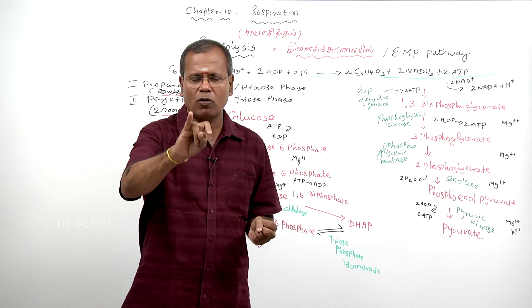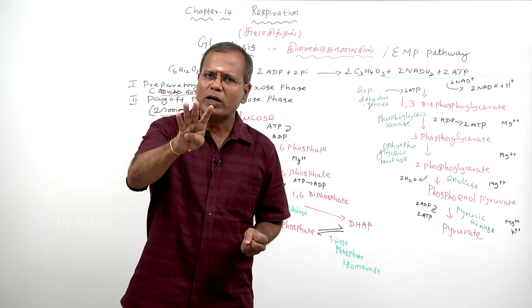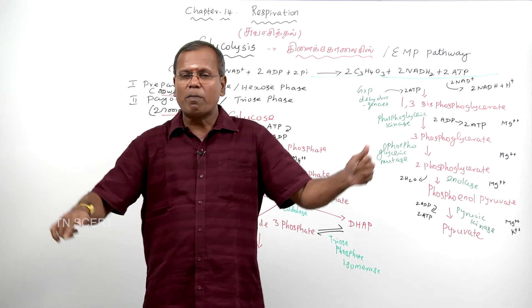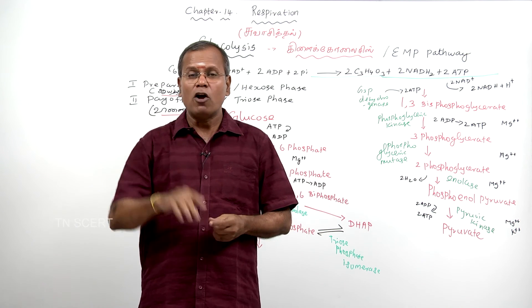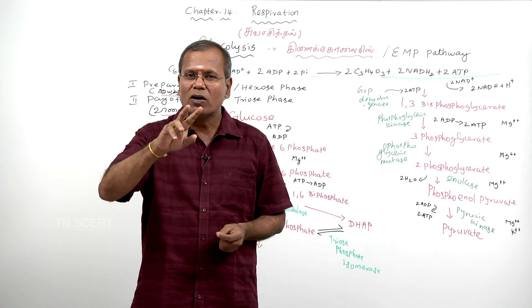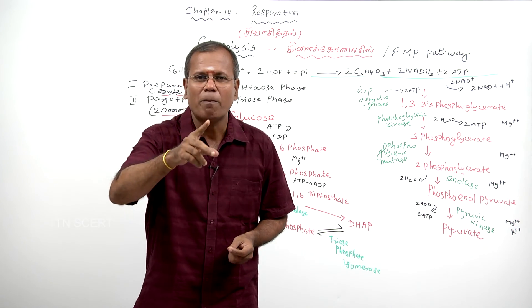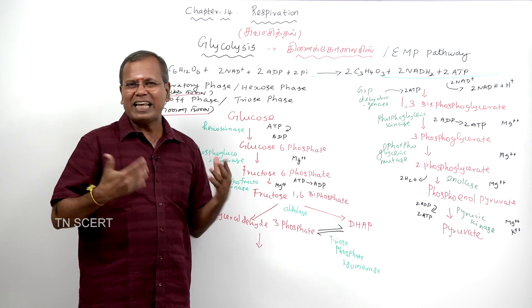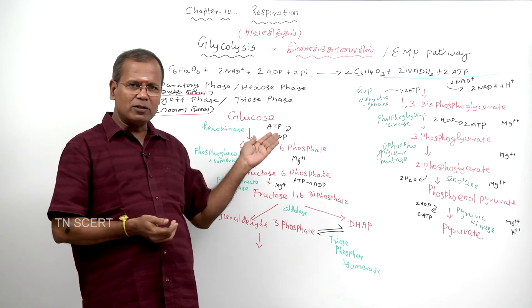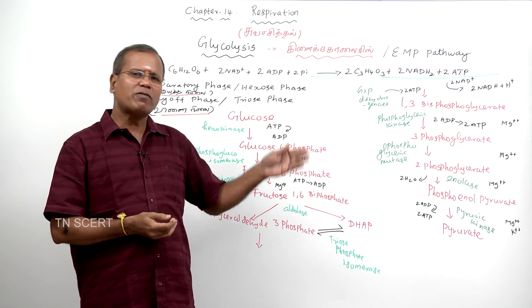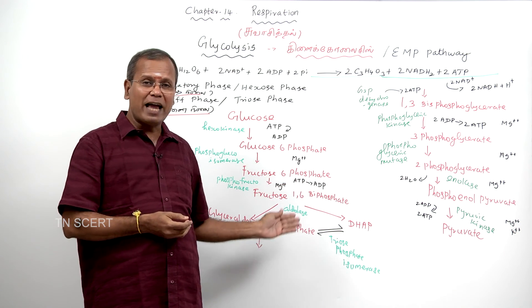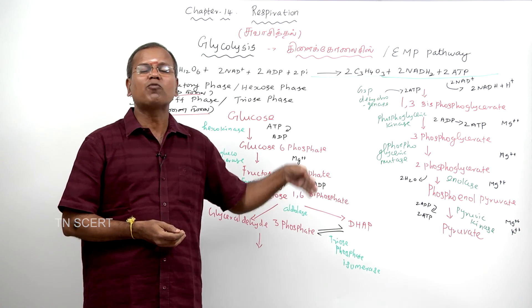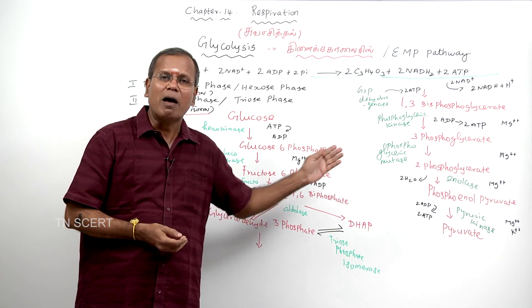For revision, the ten chemicals are: glucose, glucose 6-phosphate, fructose 6-phosphate, fructose 1,6-bisphosphate, glyceraldehyde 3-phosphate and dihydroxyacetone phosphate, 1,3-bisphosphoglycerate, 3-phosphoglycerate, 2-phosphoglycerate, phosphoenol pyruvate, and finally pyruvate. The ten enzymes are: hexokinase, phosphoglucoisomerase, phosphofructokinase, aldolase, triose-phosphate isomerase, glyceraldehyde 3-phosphate dehydrogenase, phosphoglycerate kinase, phosphoglycerate mutase, enolase, and pyruvic kinase.